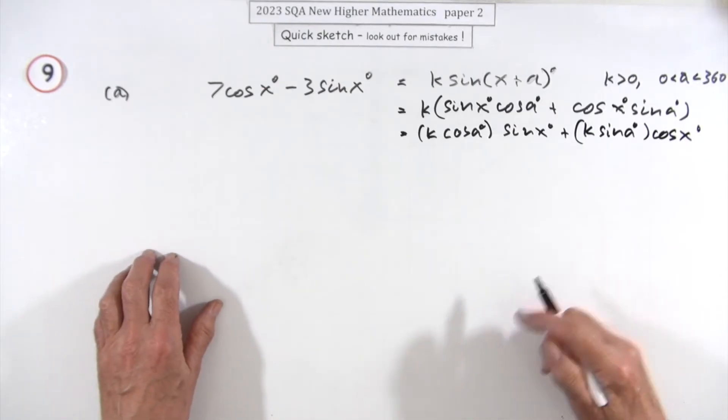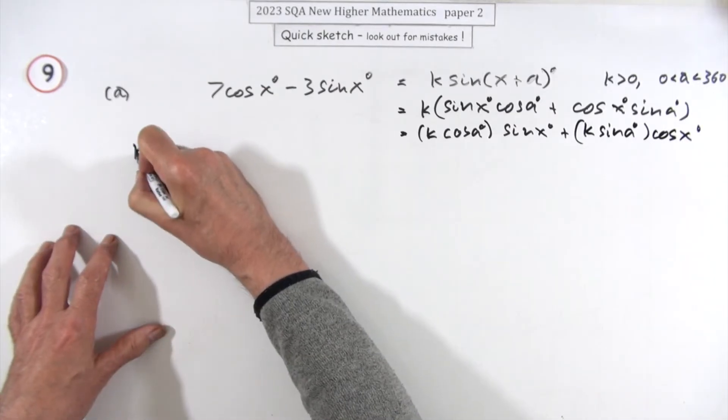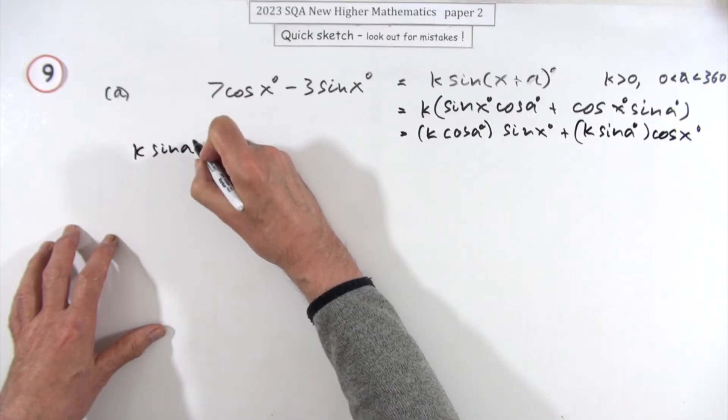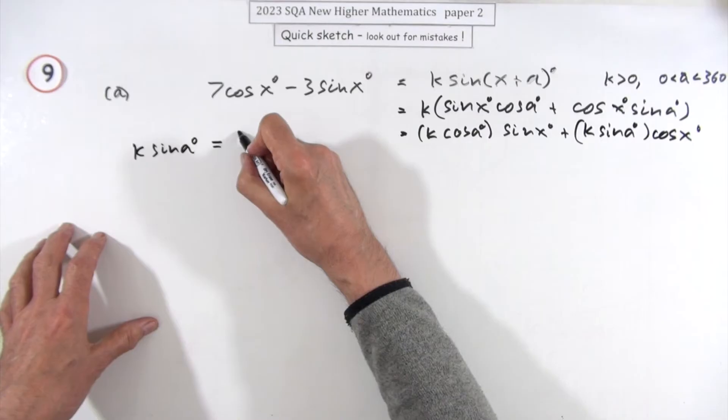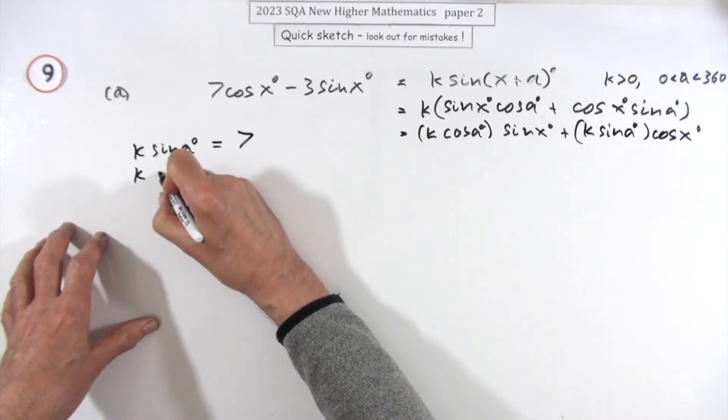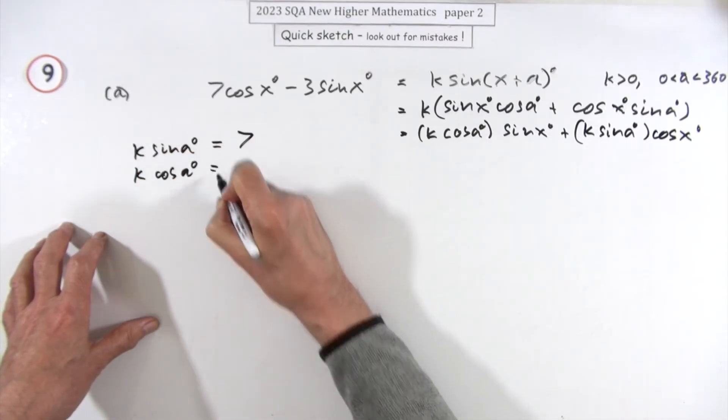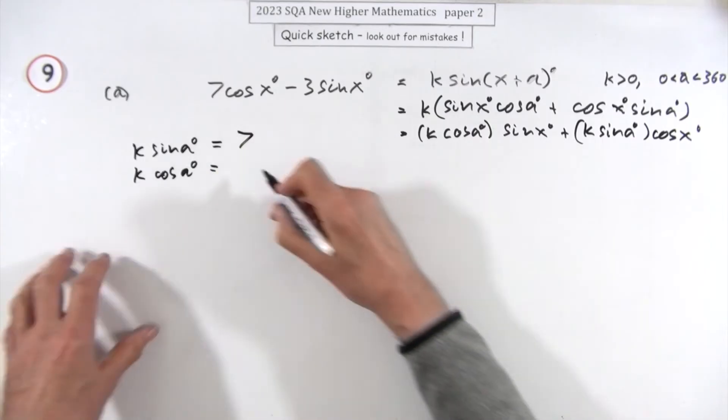Then you compare them. I'd rather put this one down first. So k sin α is the coefficient of cos x, that will be 7, and k cos α, that's the coefficient of sin x, that'll be -3.